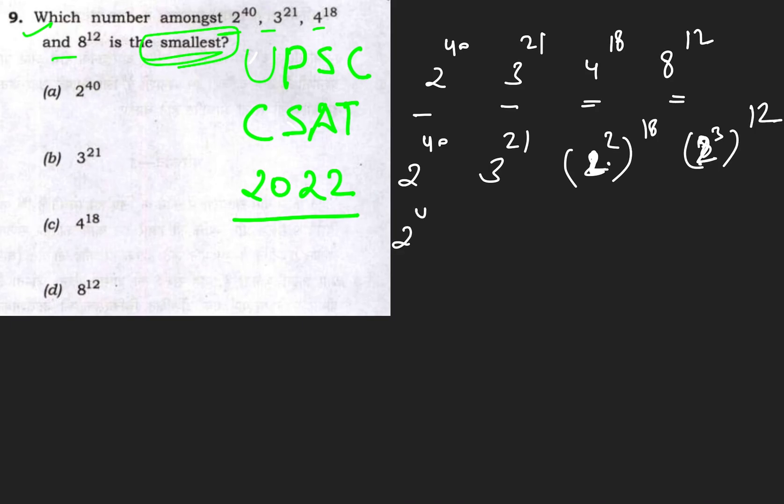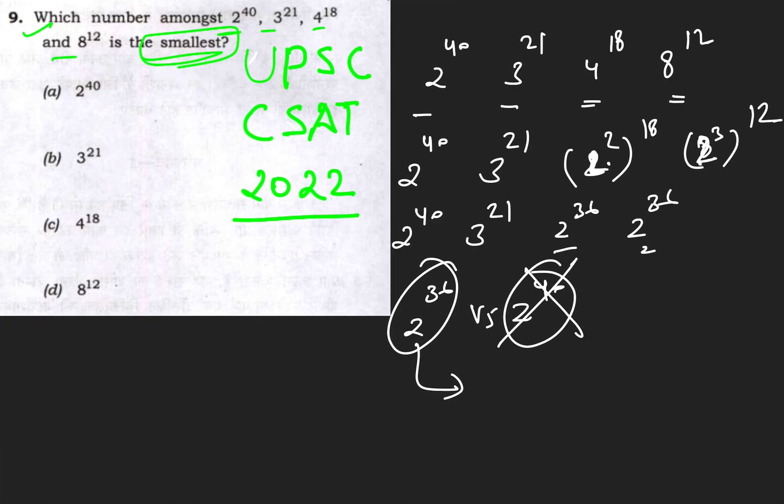After simplifying, you have 2^40, 3^21, 2^36, and 2^36. Among the powers of 2, you can easily compare—2^36 is obviously smaller than 2^40, so you can eliminate option (a). Now you are left with 2^36 and 3^21.